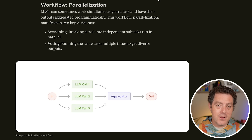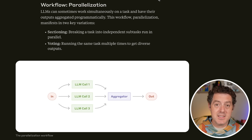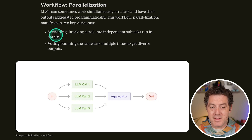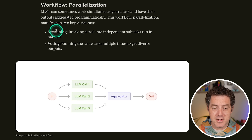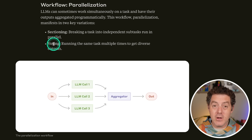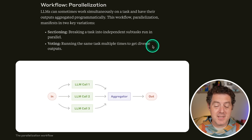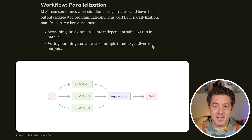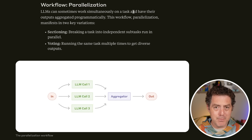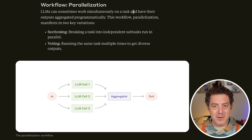Another workflow is parallelization. If the order of operations doesn't matter at a certain step, you can have multiple agents working in parallel to decrease latency. There are two variations: first, sectioning — breaking a task into independent subtasks run in parallel. Then there's voting — running the same task multiple times to get diverse outputs. This is essentially chain-of-thought reasoning, the basic explanation for how thinking models work: generate a bunch of different variations, figure out which is best, then iterate. These are all simple patterns in theory, though they get more complex when you productize them.